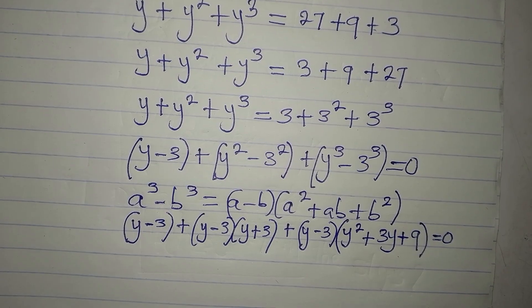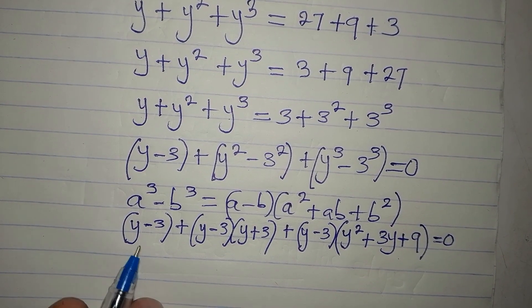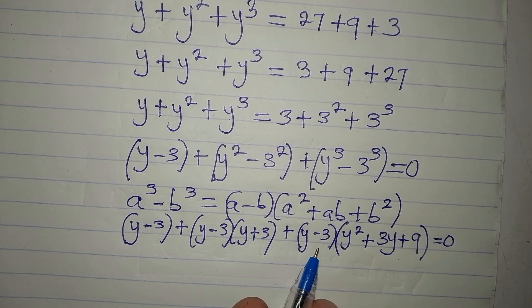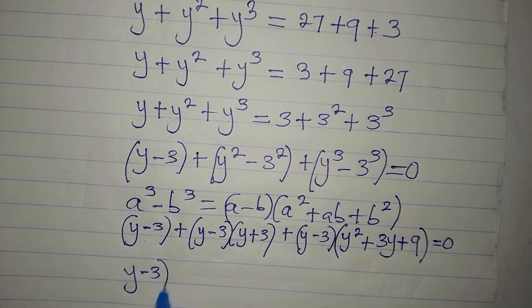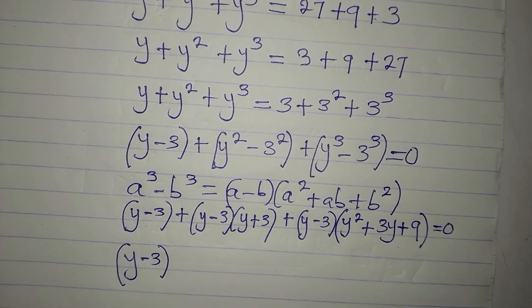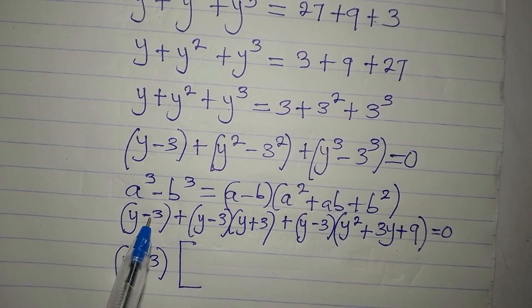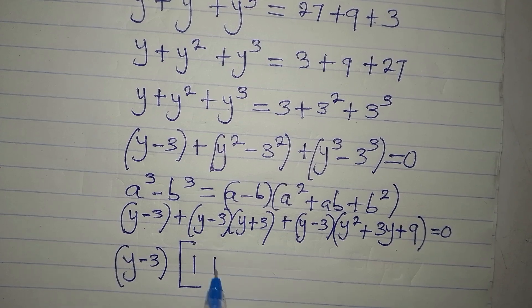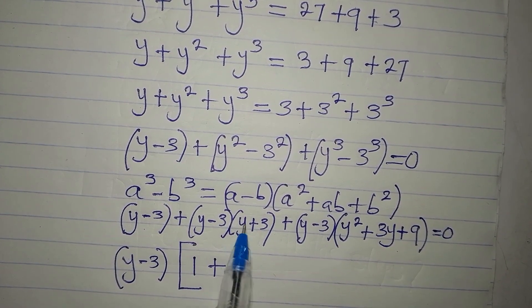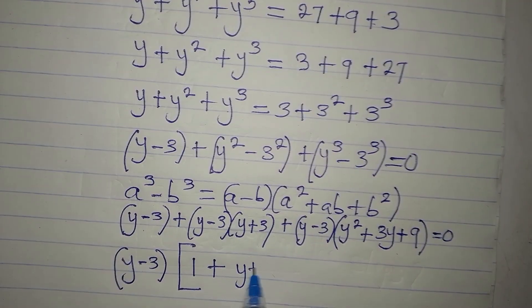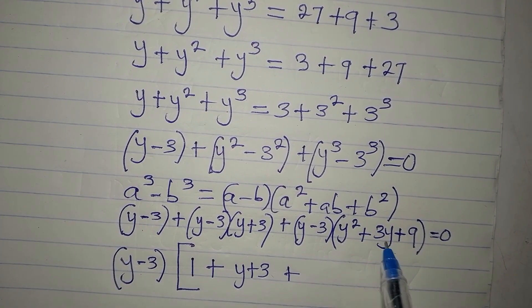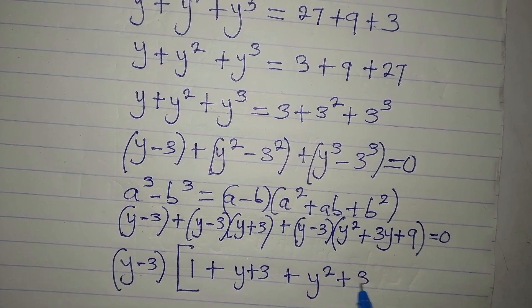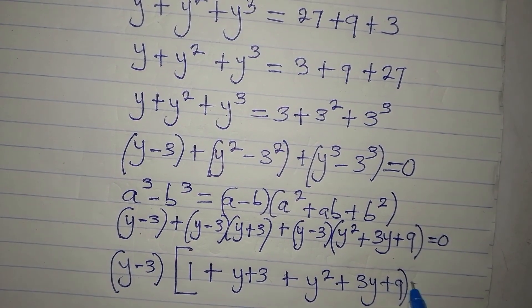We discover that (y minus 3) is common to all three terms. So (y minus 3) comes out as the common factor. Dividing through: the first term gives 1, the second gives (y plus 3), and the third gives (y squared plus 3y plus 9). So we have (y minus 3) times [1 plus (y plus 3) plus (y squared plus 3y plus 9)] equals zero.